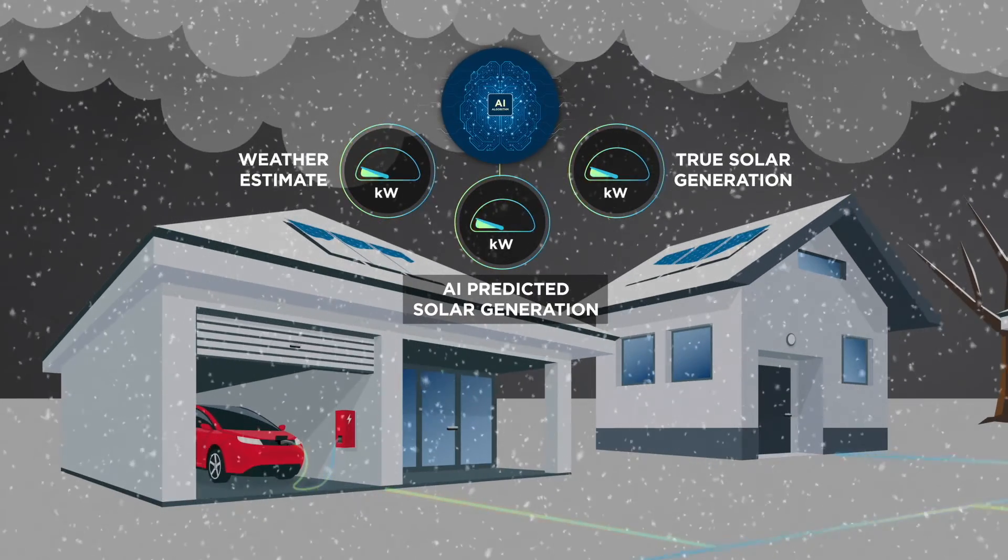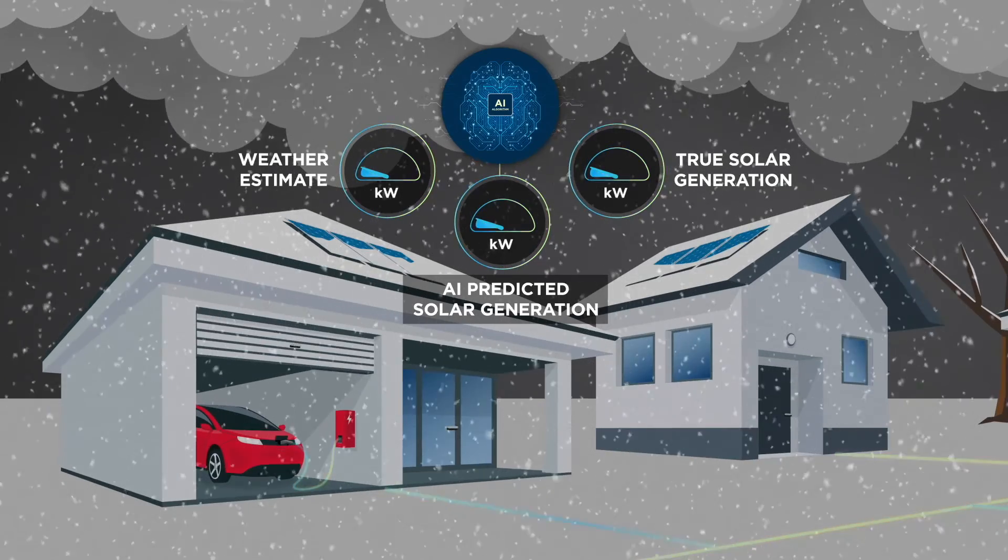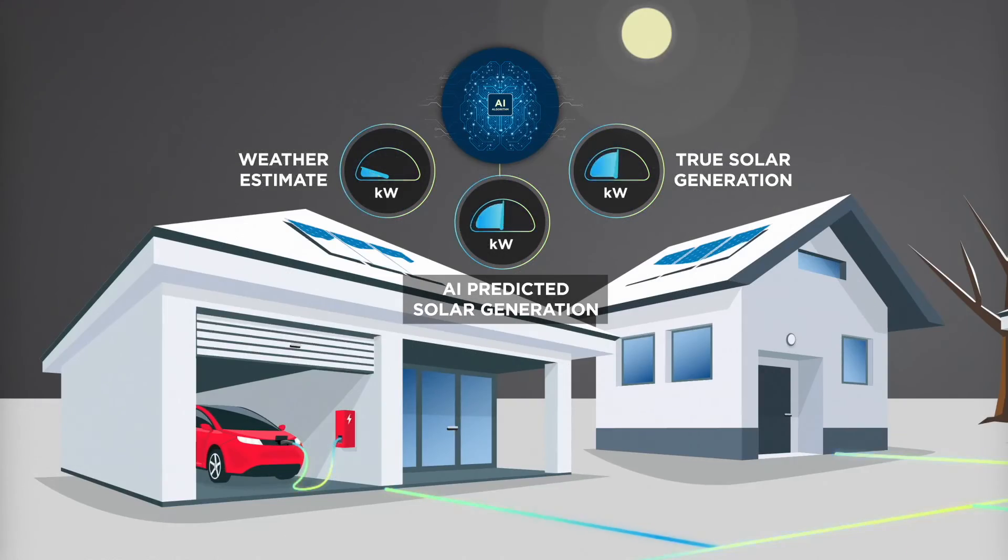It had accurate estimation on typical weather days where the current state of the solar panel was different from the weather prediction, like snow coverage on solar panels on a sunny day.